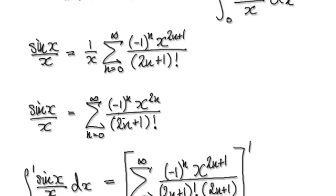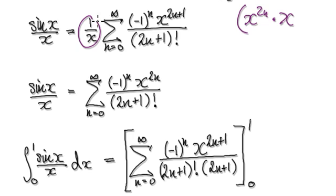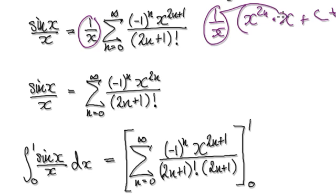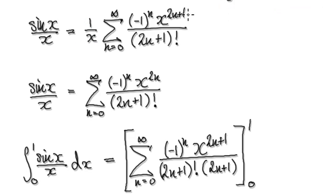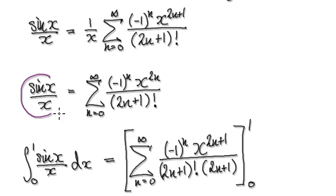If you look at the series for sin(x), you can imagine a term like x^(2n+1). Then multiplying by 1/x, the x in the denominator cancels with the x factor in each term of the series. So from here that leads us to the simplified series for sin(x)/x itself.